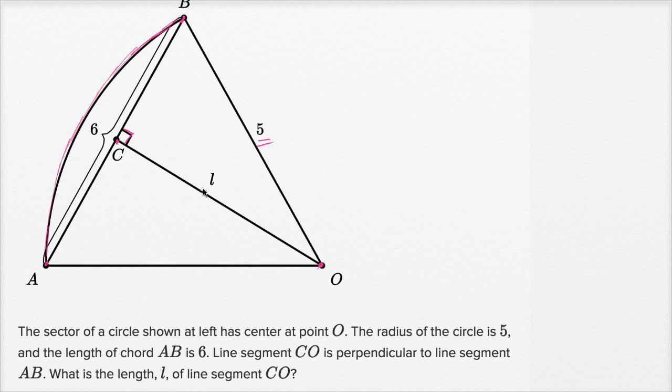What is the length L of line segment CO? So one thing that might immediately jump out at you is we are dealing with a right triangle up here. If you have a right triangle and you know two of the sides, you can use the Pythagorean Theorem to figure out the third side.